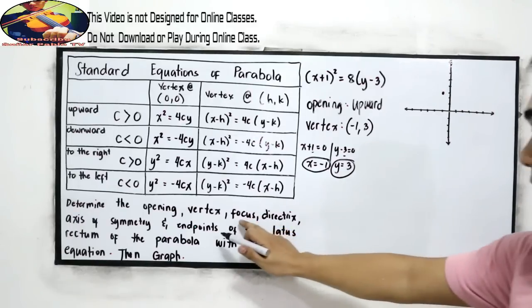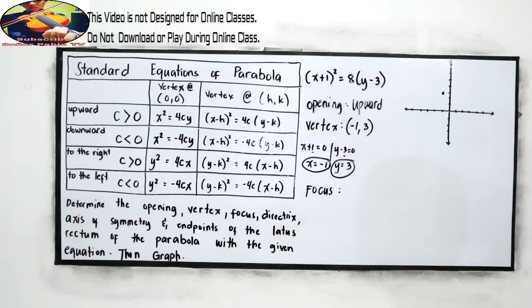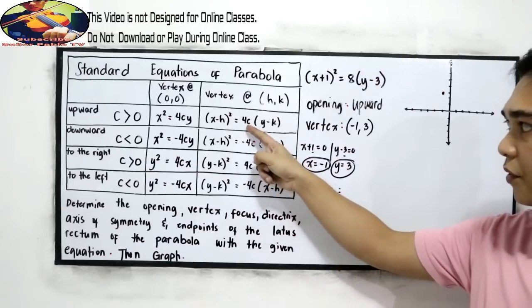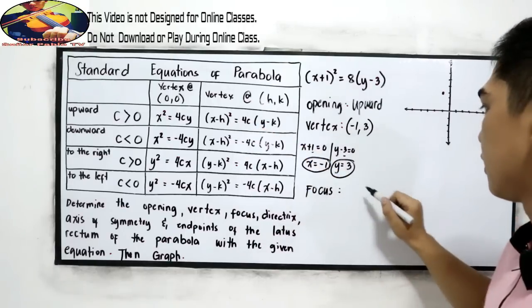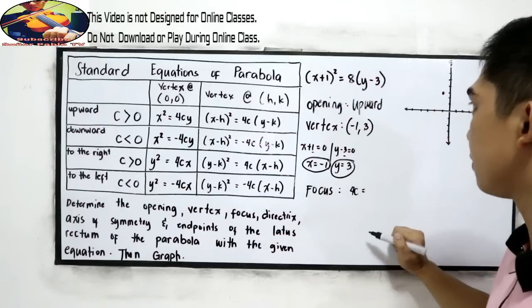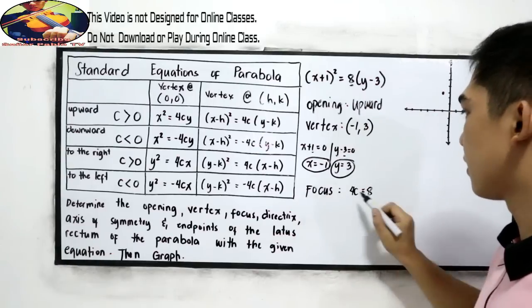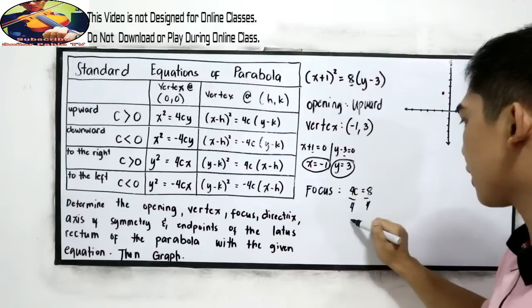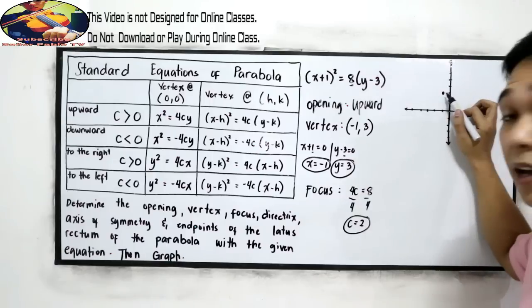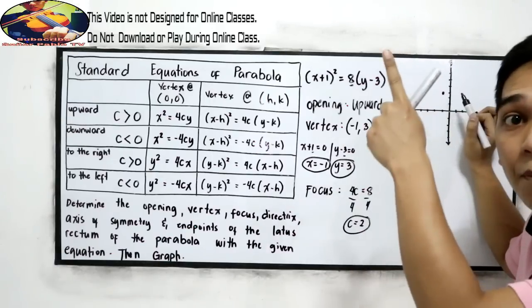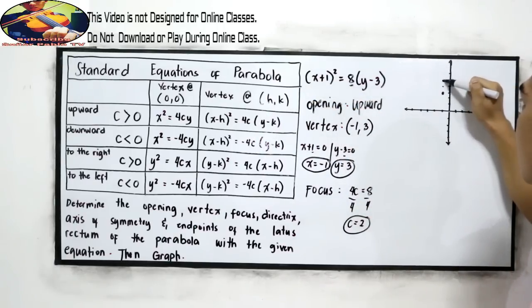Next, we're going to find the focus. Our focus, or the p, that is equal to our 4c. So we're going to find that 4c is equal to, here 4c is 8. So divide by 4, c is equal to 2. That means, from our vertex, we're going to locate 2 units up, because the opening is upward. So 1, 2. This will be our focus.